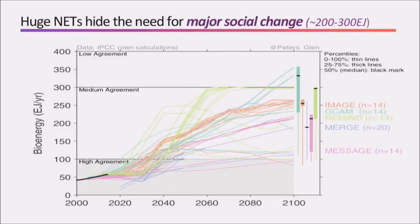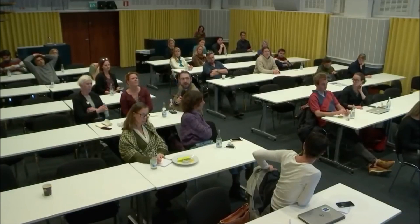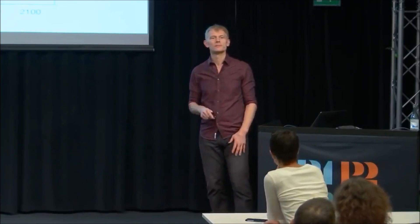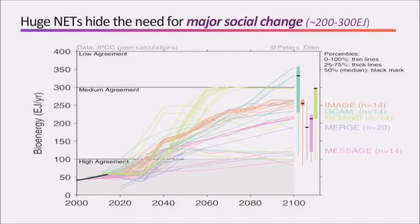An audience member asks: how much is it just BECCS, and how much is it also carbon capture and storage which could be used at coal power plants now? The speaker responds: these are the scenarios going into the IPCC for a likely chance — a reasonable chance — of 2 degrees centigrade. These scenarios work out the amount of bioenergy, and most of this is BECCS across the century. By about 2050–2060, this is the range we assume will be working. Notice there are virtually no models that don't assume this — virtually every model has it in.